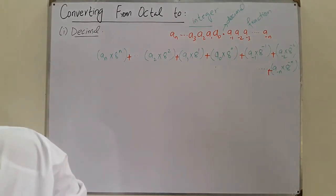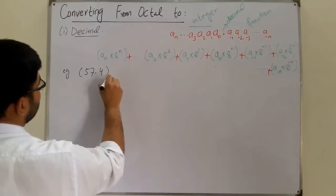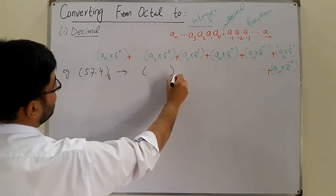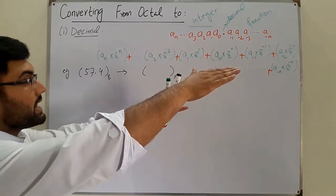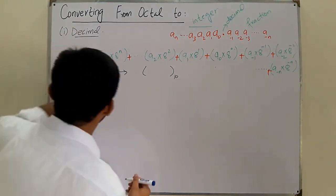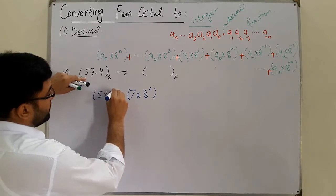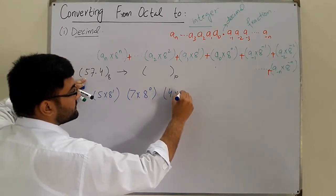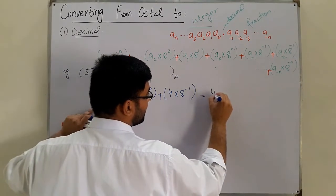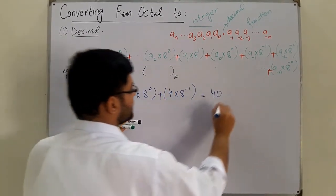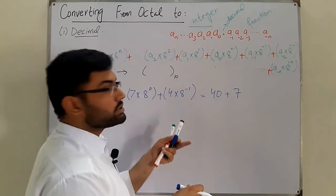Let's have an example: 57.4 in base 8, and we want its value in base 10. The decimal point is our reference — to the left we take positive weights, to the right negative weights. So 7 is multiplied by 8⁰, 5 is multiplied by 8¹, and 4 is multiplied by 8⁻¹. That gives us: 8¹ is 8, and 8 fives are 40. Then 8⁰ is 1 and plus 7. Then 8⁻¹ is 1/8, so 4 × 1/8 = 1/2 = 0.5.